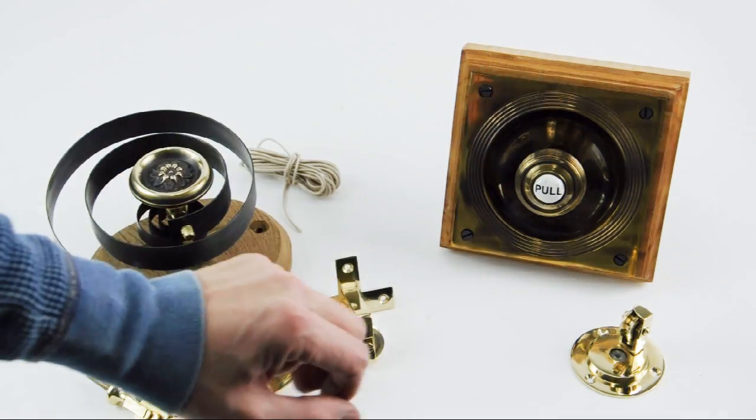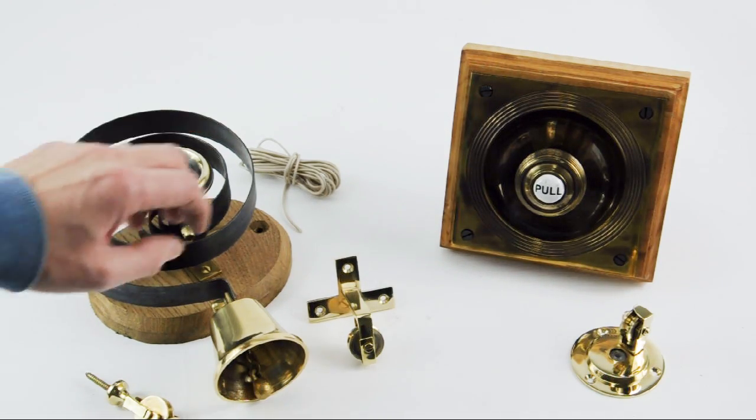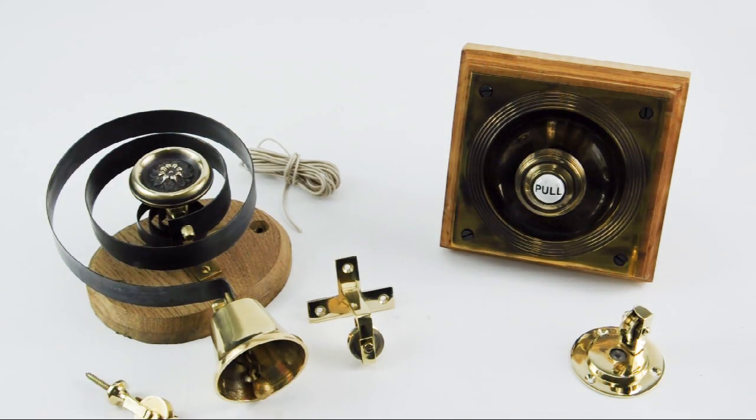So you get the bell pull for the outside, a blanking pulley to guide the cord on the inside of your house, the internal butler bell, directional pulley and an extension pulley and some cord. This is the brass version but we also do this in a nickel finish which is absolutely stunning.